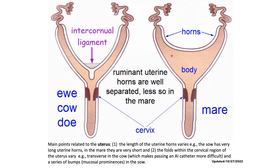Comparing uterine horn length, the sow has very long uterine horns because she is a polytocous animal, whereas the mare has very short uterine horns. The cervix also differs by species: the cow, ewe, and doe have annular rings — transverse folds that make passing the AI catheter more difficult. The sow has mucosal prominences in the cervix, while the mare has longitudinal folds, to be discussed further in the cervix section.